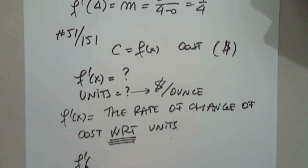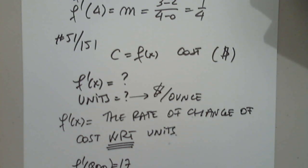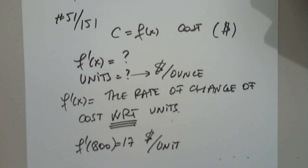What does the statement f prime of 800 equals 17? It's 17 dollars per unit. They should, you know, dollars per unit or per ounce. What does it represent? What do you think this means? If you produce 800 ounces, the rate of change at that instant, the rate of change of cost per ounce at that instant will be a positive, an increase of 17 dollars per unit. So the rate of change of cost with respect to number of ounces when we produce 800 is 17 dollars per unit.